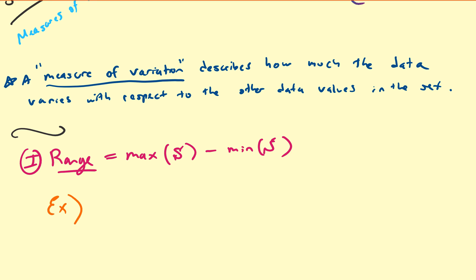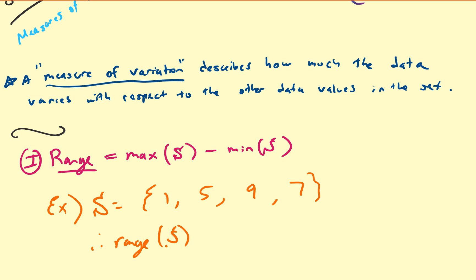For example, given the data set S = {1, 5, 9, 7}, the range is equal to the maximum minus the minimum value, which is 9 minus 1, so that's going to be equal to 8.